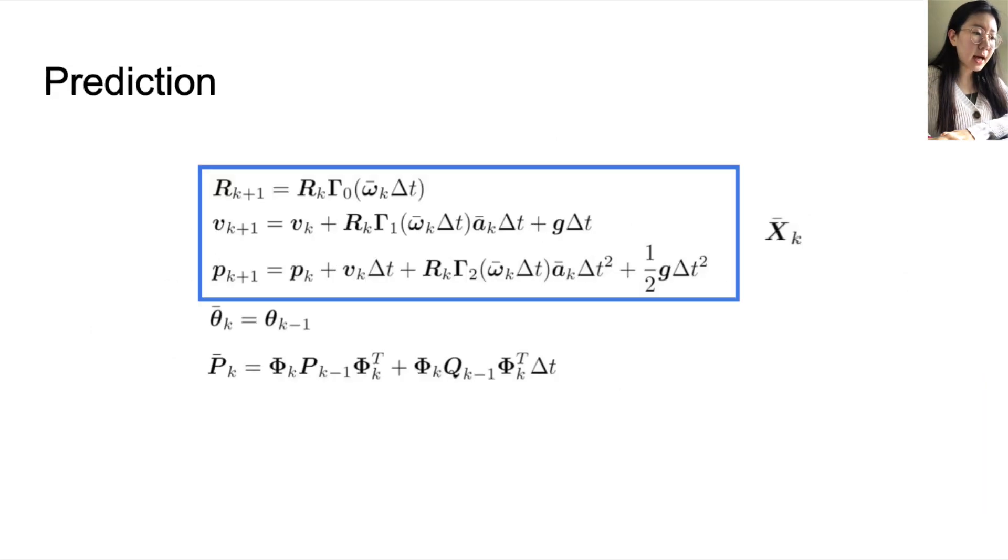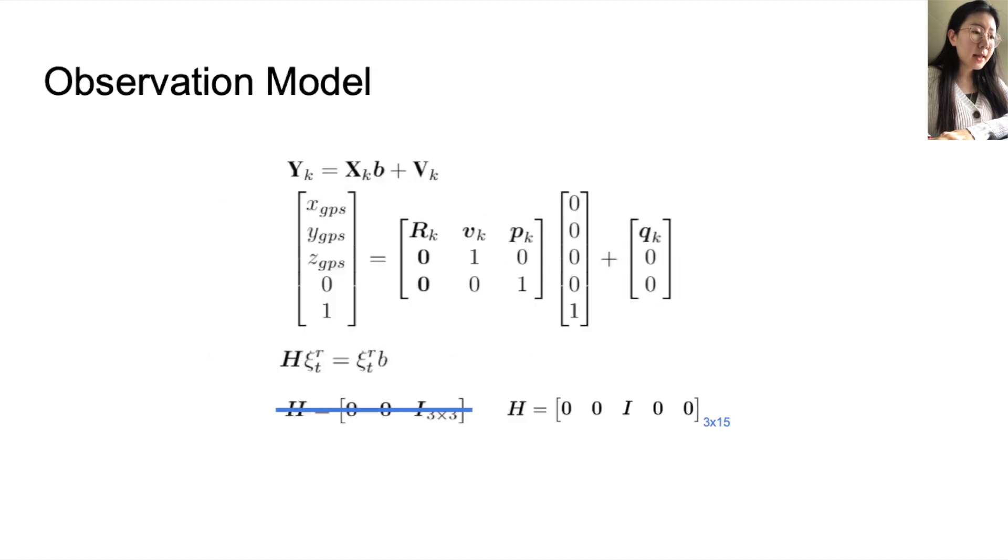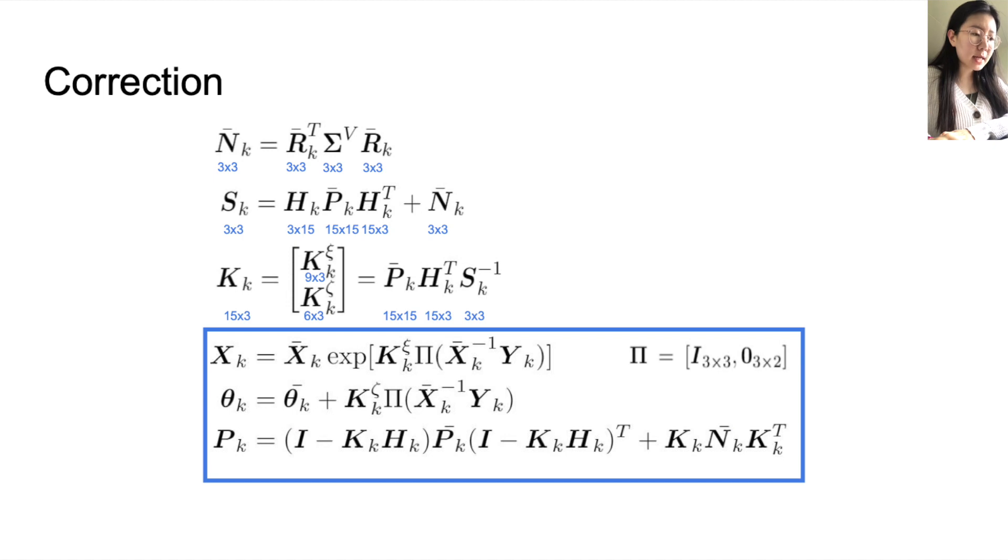Then, we discretize the system dynamics to find the prediction. Next, we write down the observation model to retain the autonomous property of invariant EKF. Finally, we use unscented transform to transfer the covariance P matrix from Lie to partition.